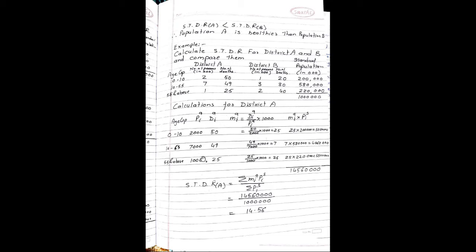7 into 5,80,000 becomes 40,60,000. Then next age group is 55 and above: total population is 1000, number of deaths are 25. Mortality rate is equal to 25 upon 1000 into 1000, so that becomes 25. 25 into standard population value of 20,00,000 gives 55,00,000, i.e., 55 lakhs.